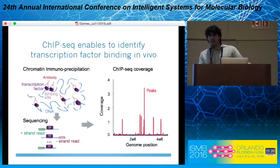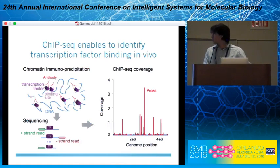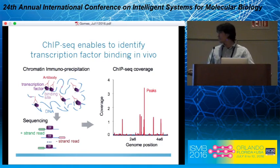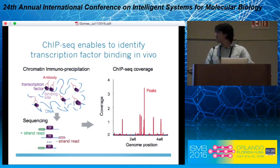The way we can obtain and map the regulatory network of an organism is by doing experiments. One example is ChIP-seq, which stands for chromatin immunoprecipitation followed by sequencing. The steps of the experiments are represented schematically here in this figure, starting with the chromatin immunoprecipitation step.